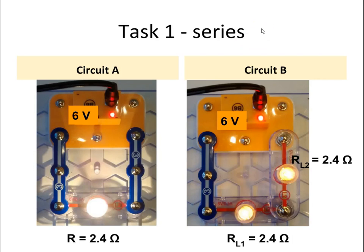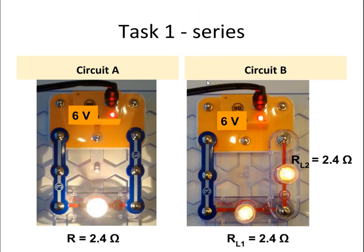Now let's take a look at Circuit B where we have two light bulbs in series. The resistance of each light bulb is 2.4 ohms. The total resistance equals R1 plus R2, so 2.4 ohms plus 2.4 ohms equals 4.8 ohms. Go ahead and write that down. The total voltage drop over the light bulbs is 6 volts, and since the wires have almost no resistance, the voltage drop starts essentially at the first bulb. Because these are equal resistances, the voltage drop over a single light bulb is the total voltage divided by two.